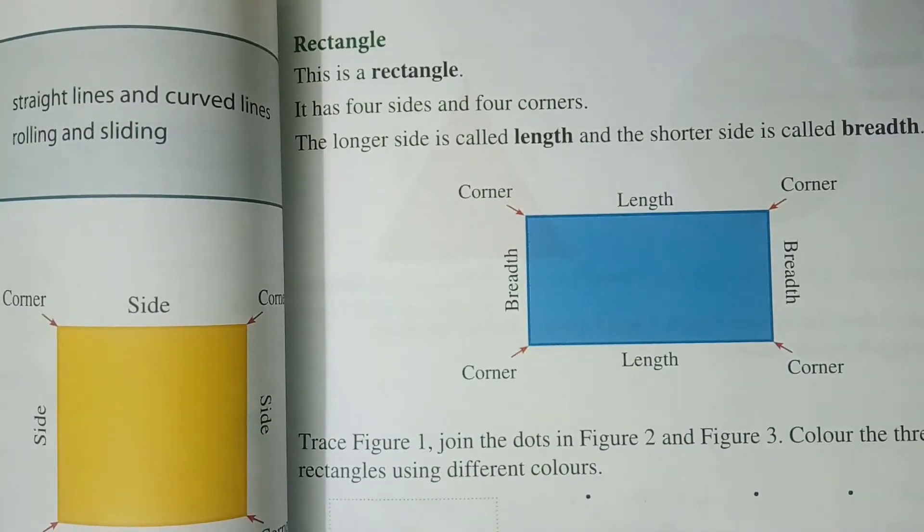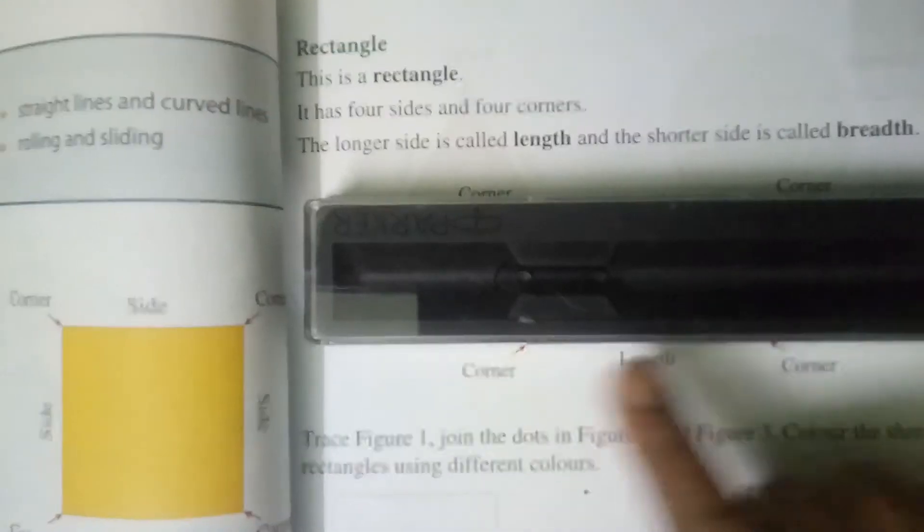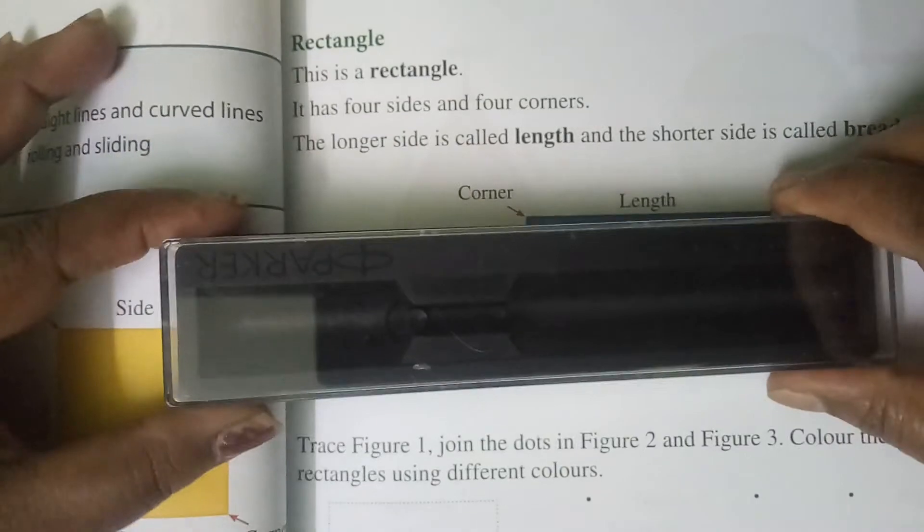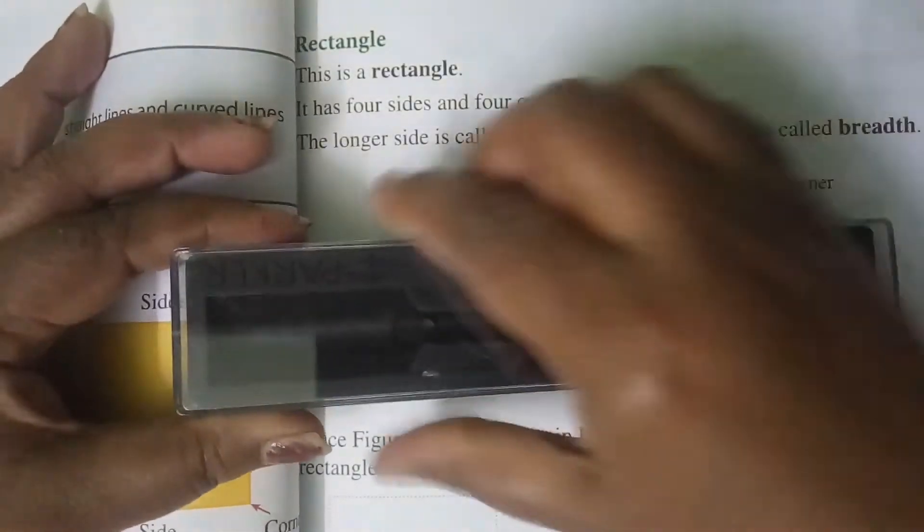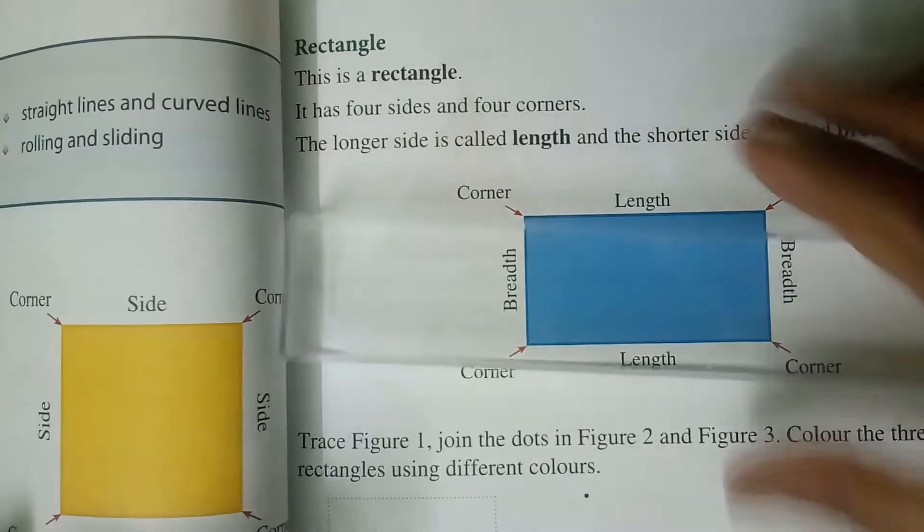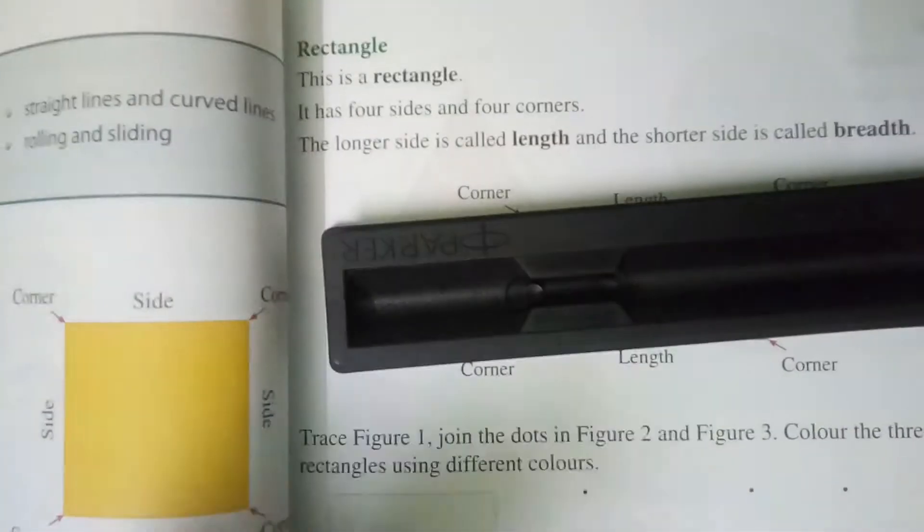I would like to show one object to you. I hope you can see this object, children. This is actually a pen box. If you open this, you can see this, children.